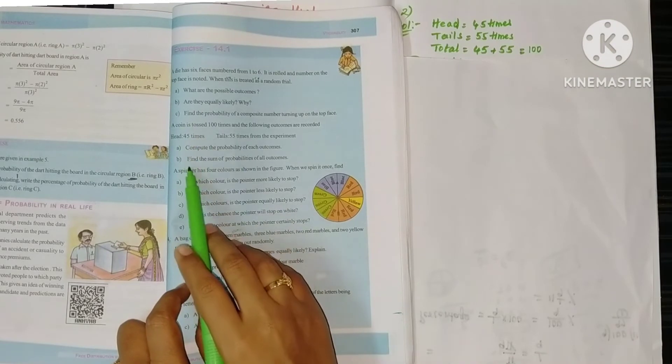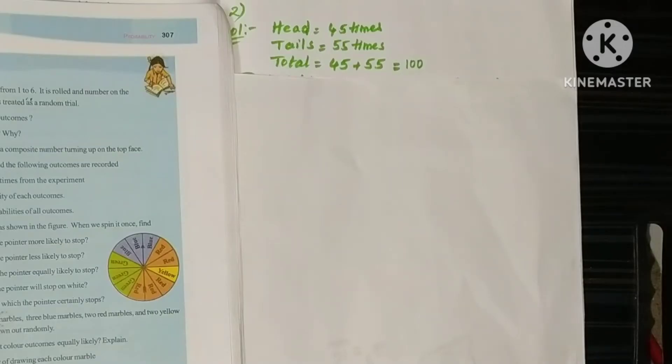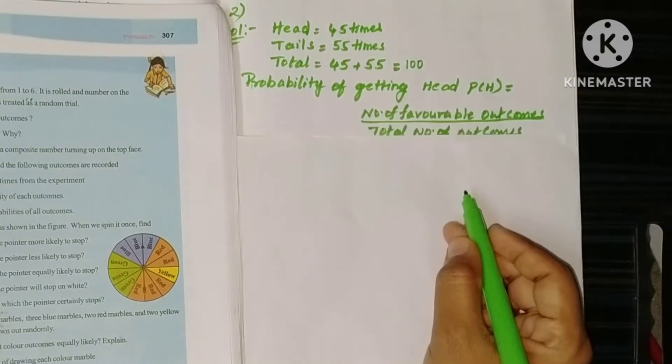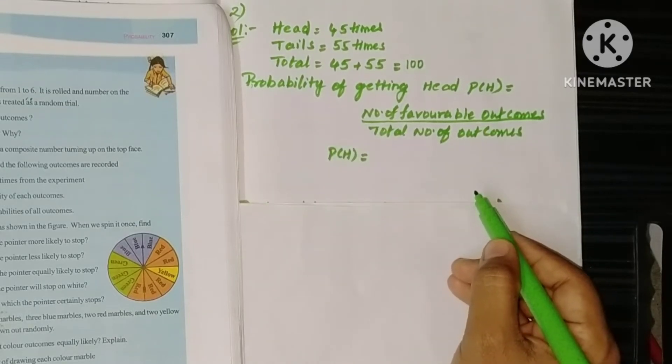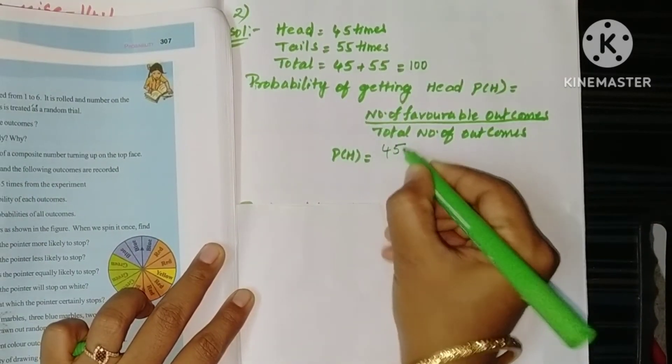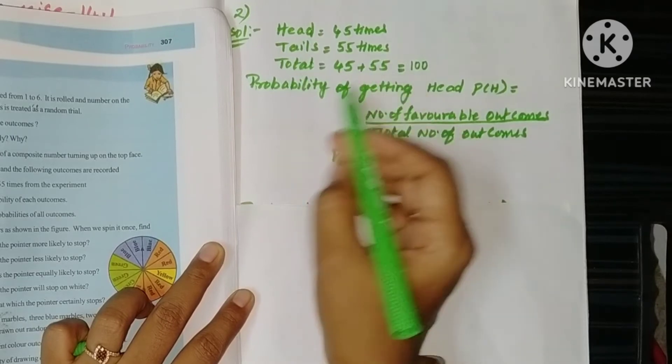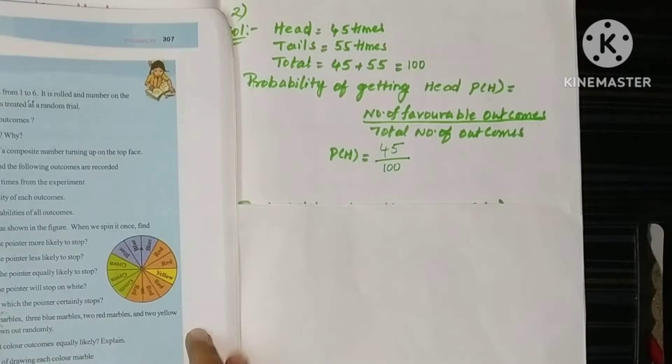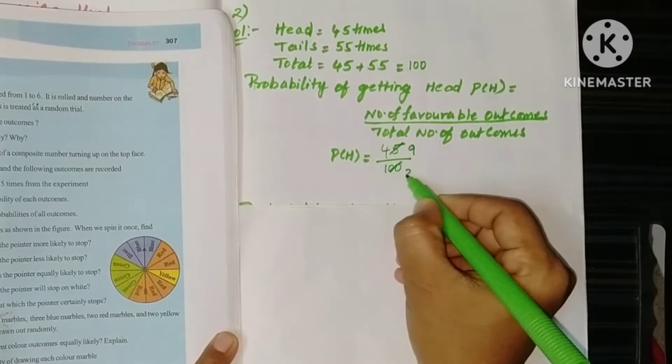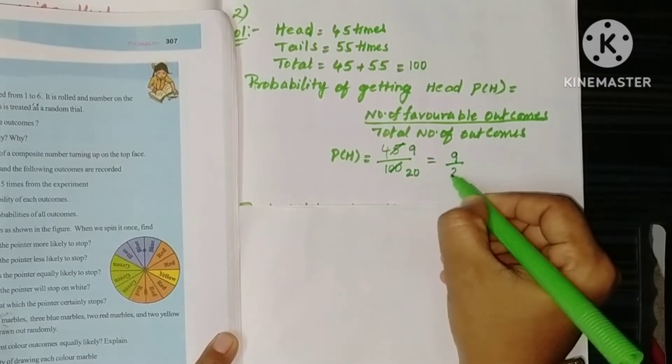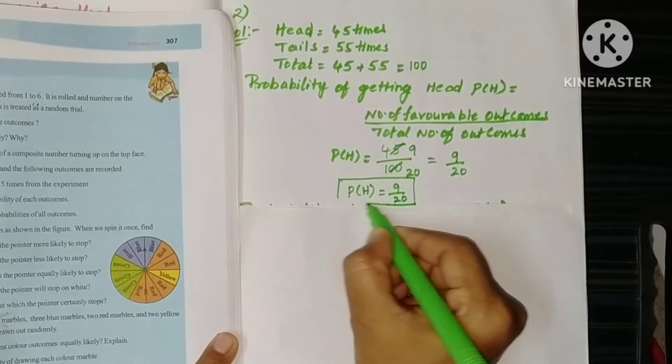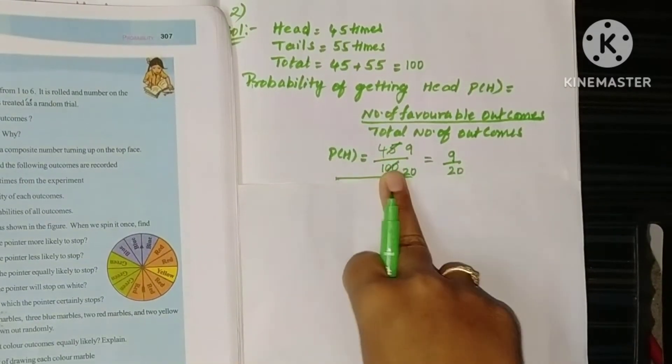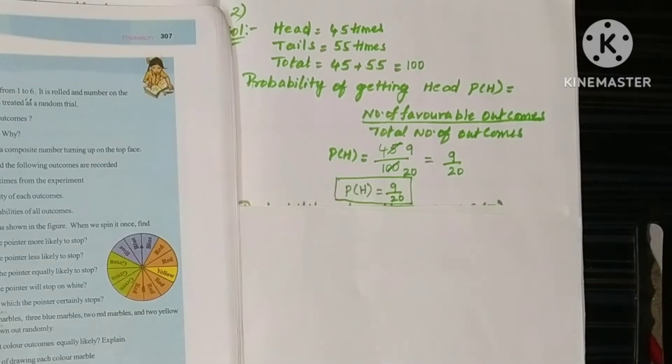First, compute the probability of each outcome. That means first probability of head we will calculate. See, probability of getting head, P of H equals - try to write the formula each time - number of favorable outcomes by total number of outcomes. We know number of favorable outcomes for head: 45 times. Total outcomes 100. You can cancel with 5 table: 5 nines are 45, 5 twenties are 100. So 9 by 20. Probability of getting head equals 9 by 20.